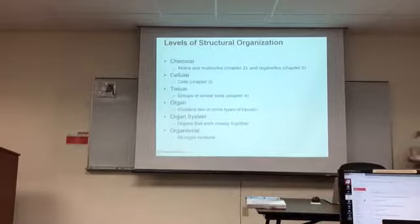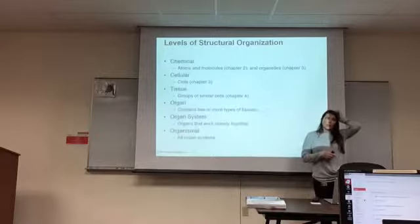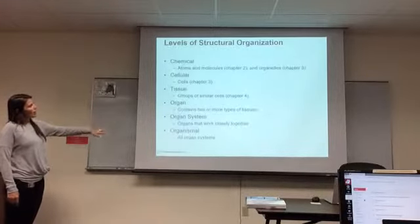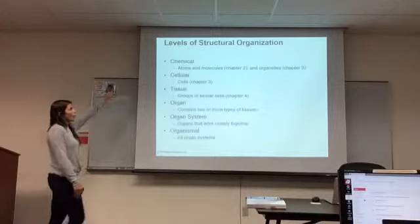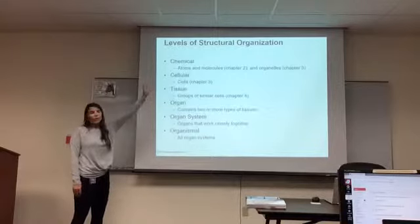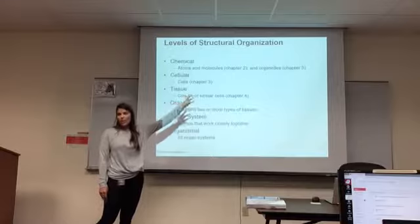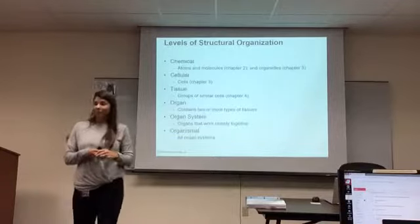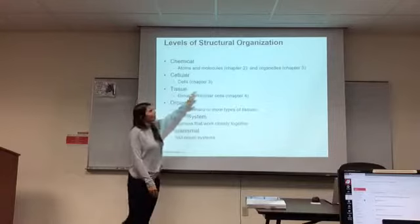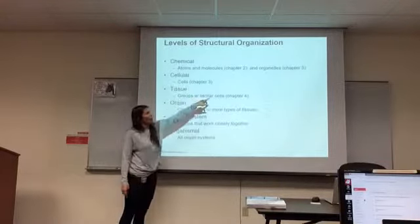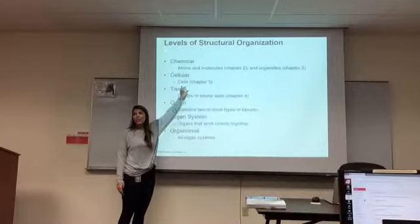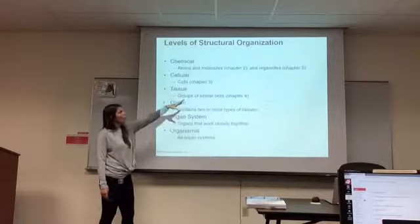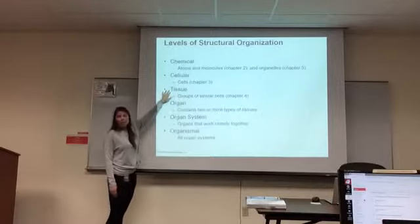Levels of organization — you should have studied this in biology. This breaks it down into the chapters we'll cover. Chapter two is chemistry and biomolecules. Chapter three covers cellular organelles. The cell is the basic unit of life — that's why this chapter is hard for students; they don't understand anything about cells. We'll talk about mitochondria, the nucleus, and all that in chapter three. So we go from molecules to organelles to cells, and then a group of cells makes a tissue.